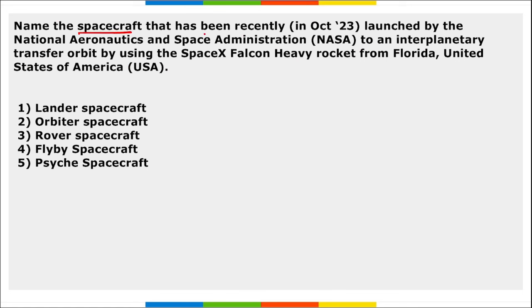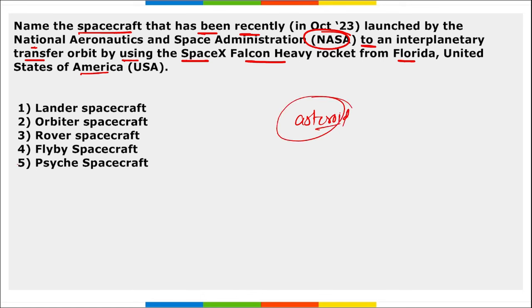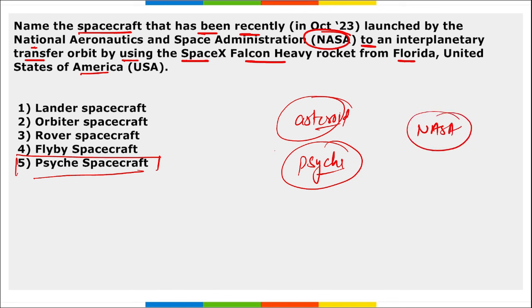Next: name the spacecraft launched by NASA to an interplanetary transfer orbit using SpaceX's Falcon 9 rocket from Florida, USA, and name the asteroid it was sent to. It is the Psyche spacecraft, sent to asteroid Psyche. This is NASA's first mission to study an asteroid that has more metal than rock or ice.